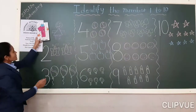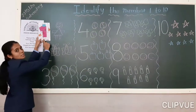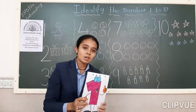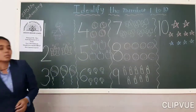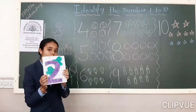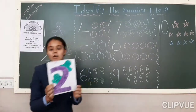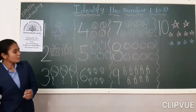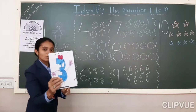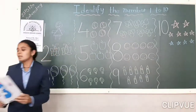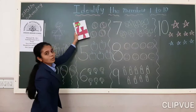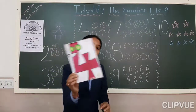Which number is this? 1 number. After 1, which number will come? 2 number. Which number is this? 2 number. After 2, which number will come? 3 number. After 3, which number will come? 4 number.